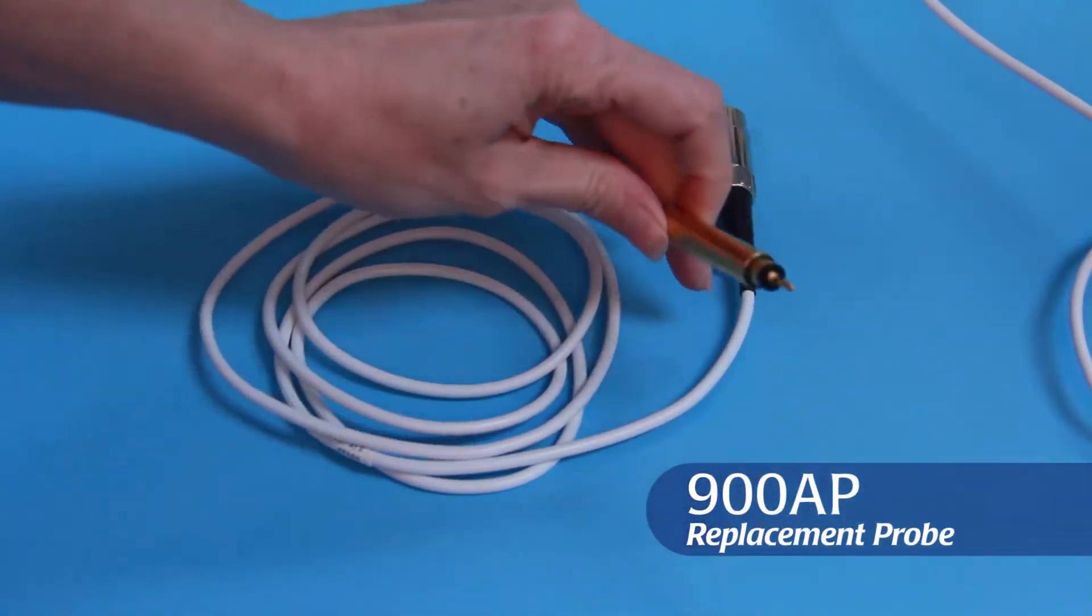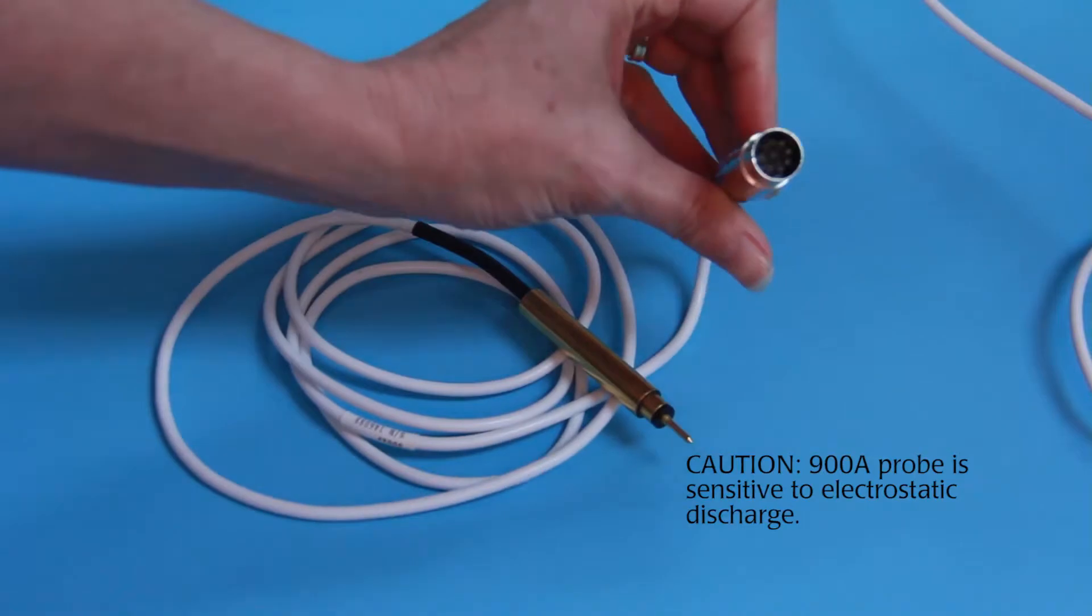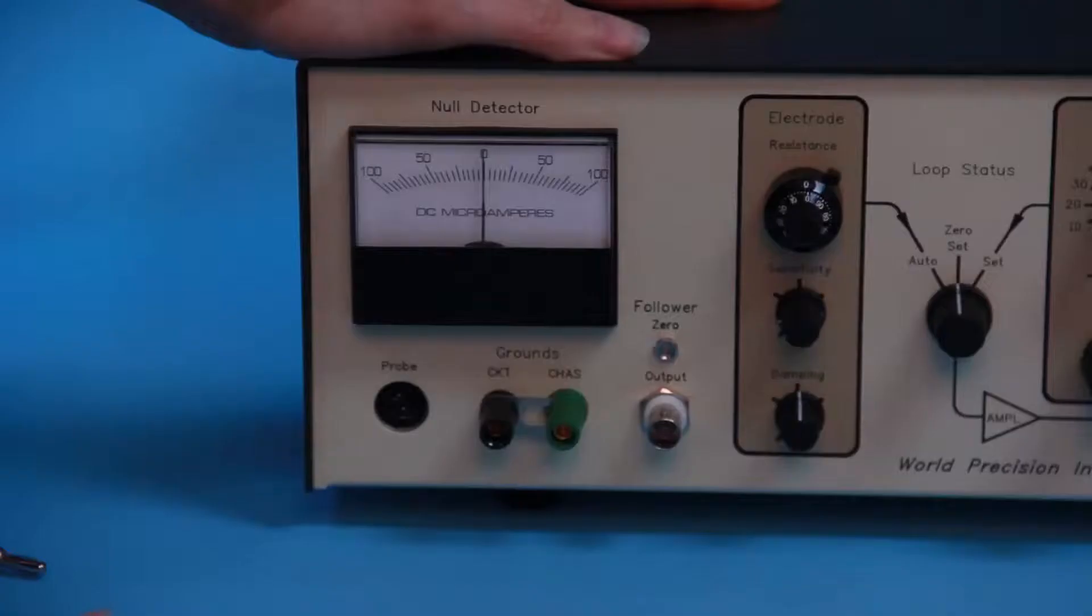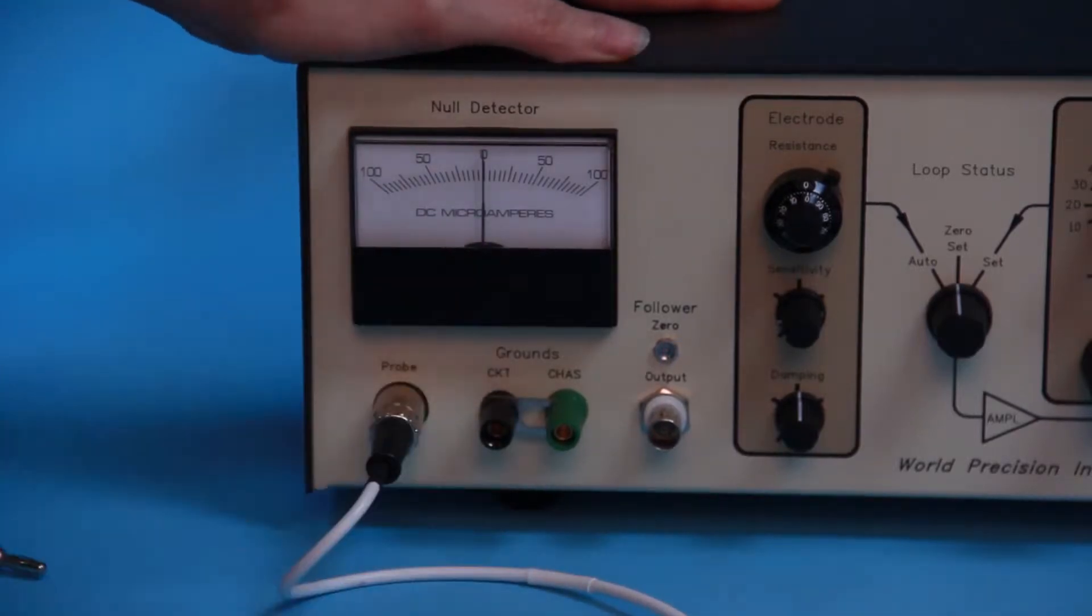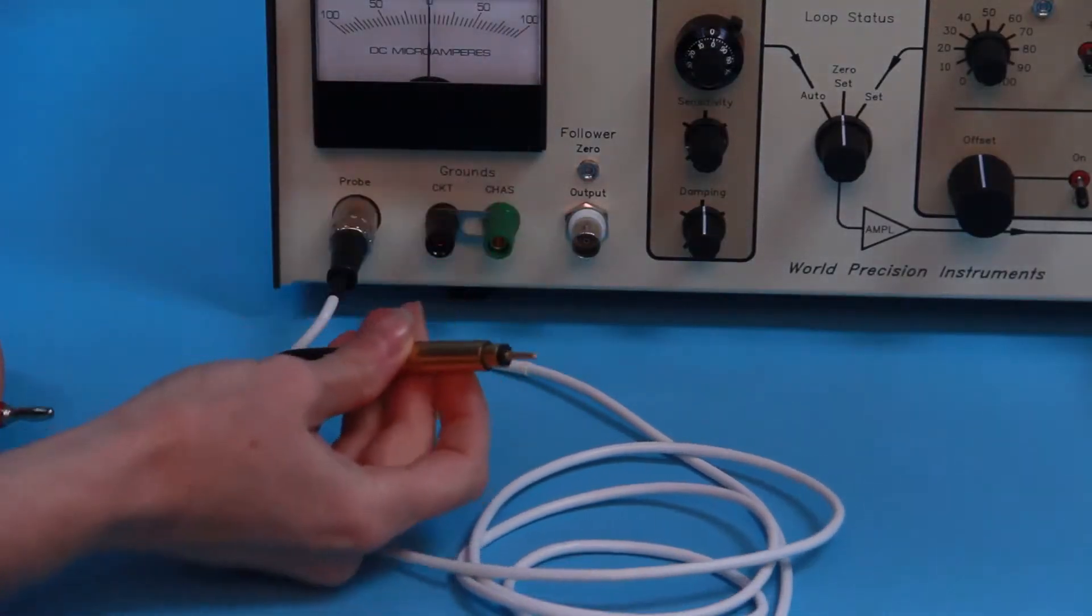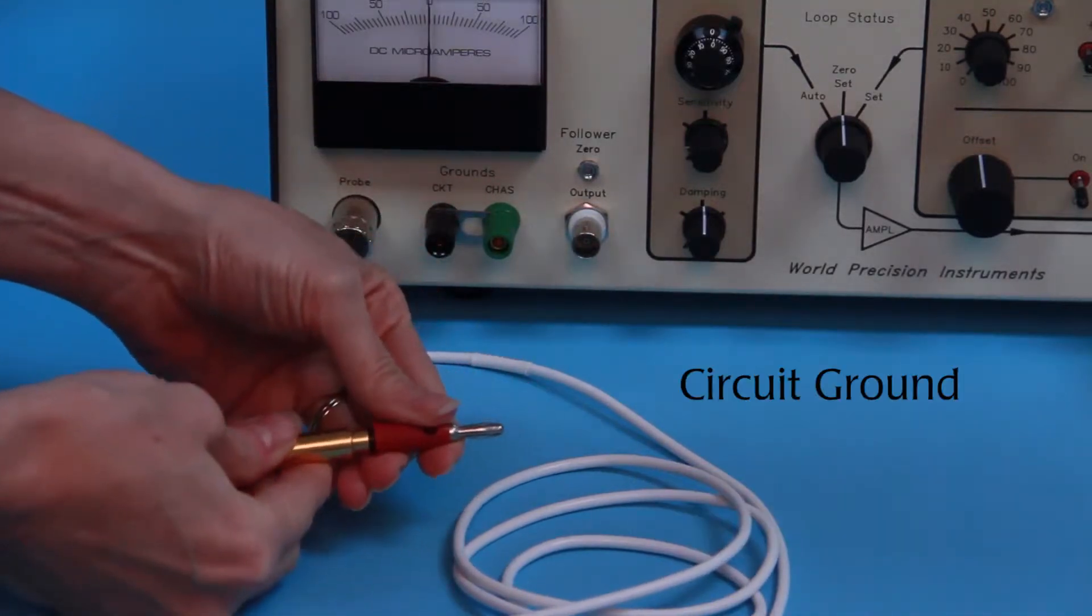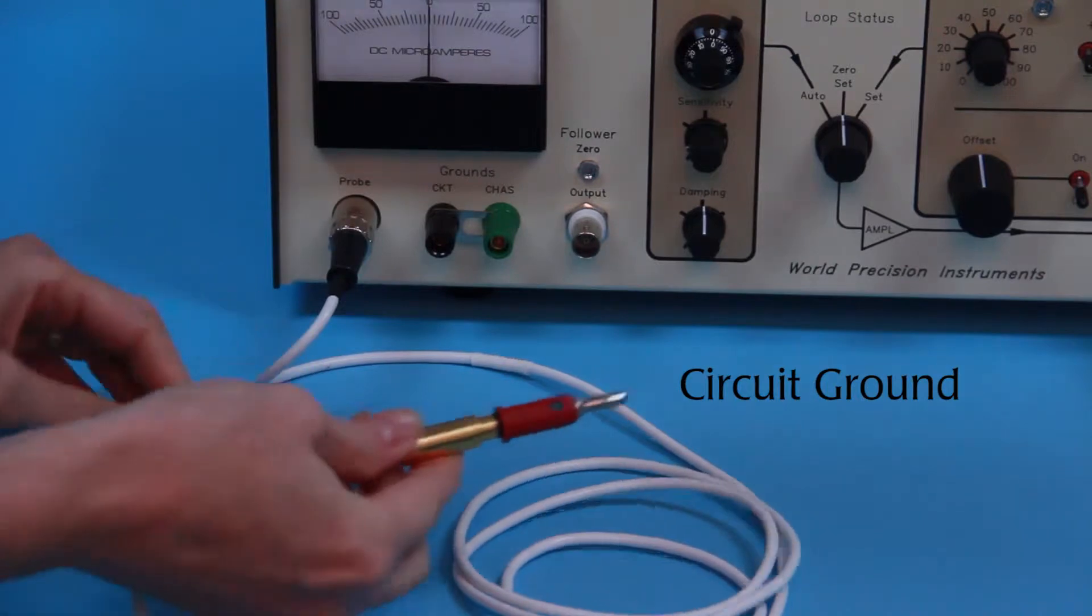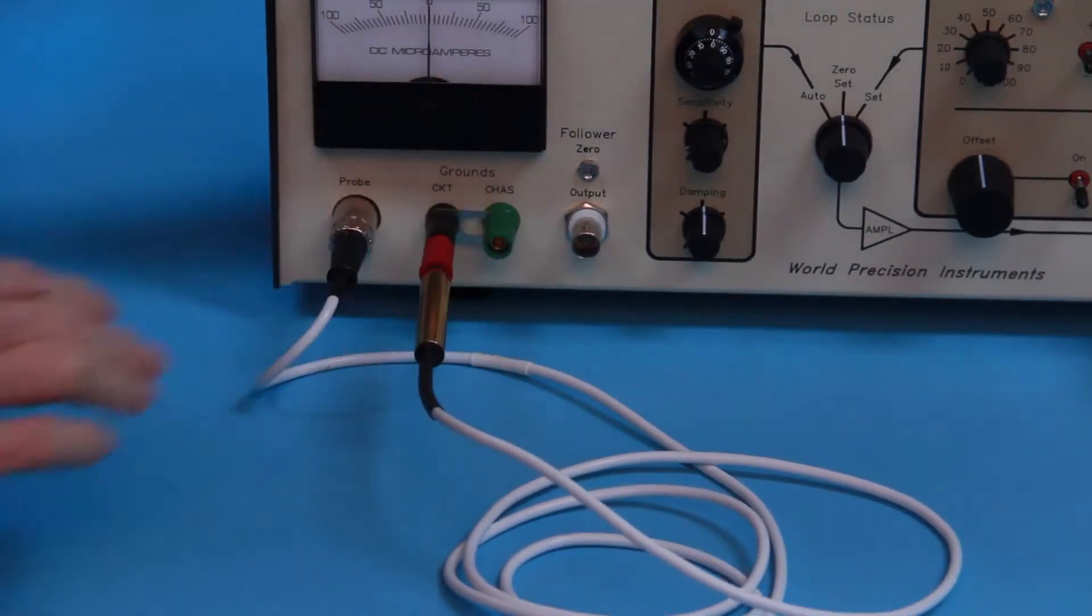The 900A active probe is packaged in an anti-static bag because it is sensitive to electrostatic discharge. Connect the probe to the connector labeled probe on the front panel of the control unit. Connect the tip of the 900A active probe to ground using a banana to 2 millimeter pin adapter. Use the CKT ground connections, which should be electrically connected with the chassis ground by a metal strap.